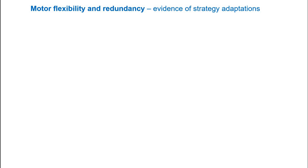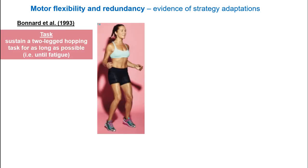Before we continue looking at other aspects of the kinetics of walking, let's explore the notion of flexibility and redundancy in the organization of movement. Redundancy means that a task can be performed in more than one way. A clear example of motor flexibility and redundancy is revealed in a study by Bernard. Bernard asked participants to sustain a two-legged hopping task for as long as they were able. The task always required jumping to 30% of maximum hopping height, two times a second. The subjects were able to keep performing the task for between 23 and 44 minutes.